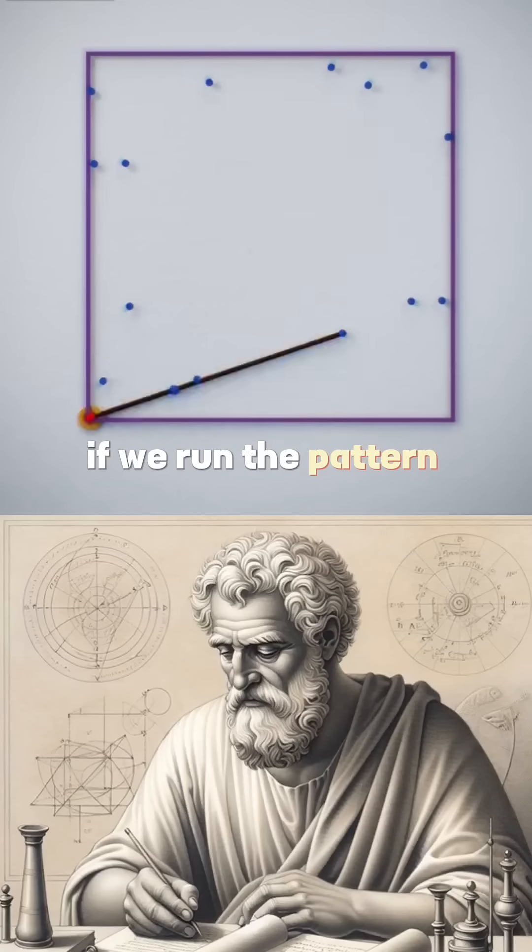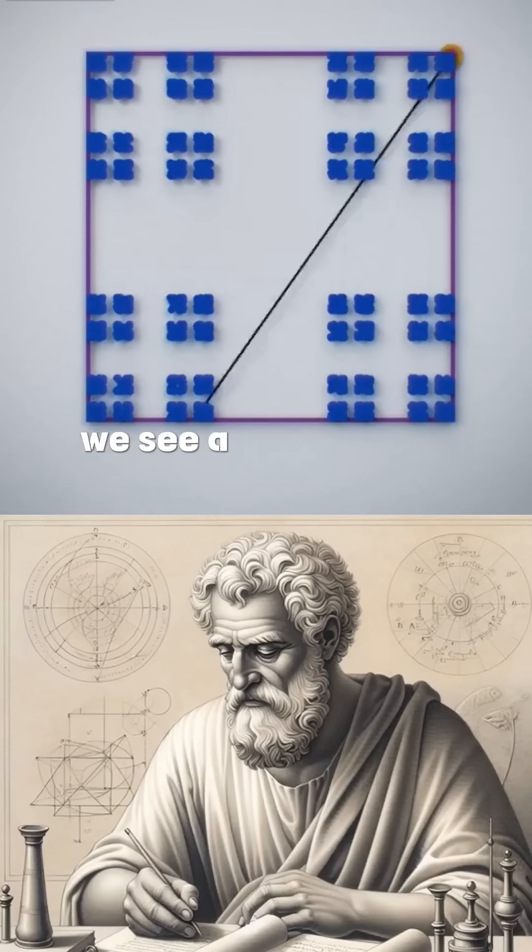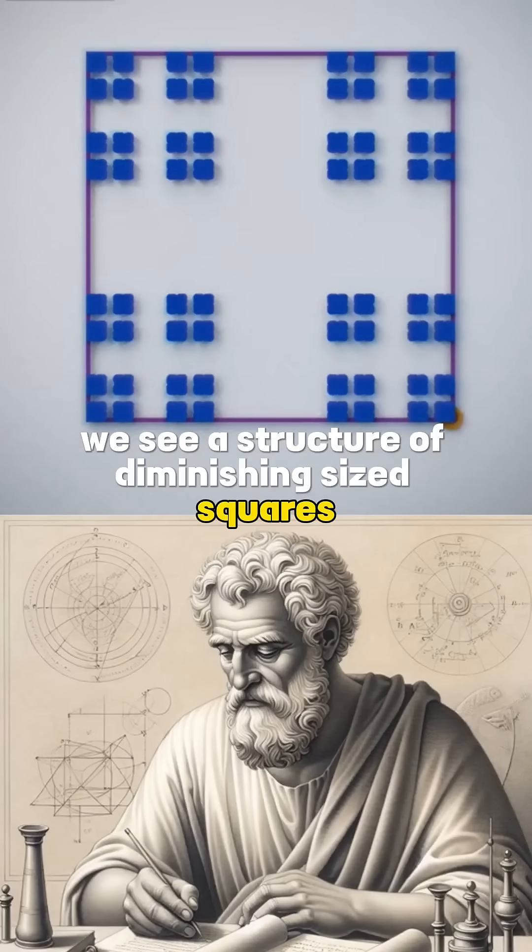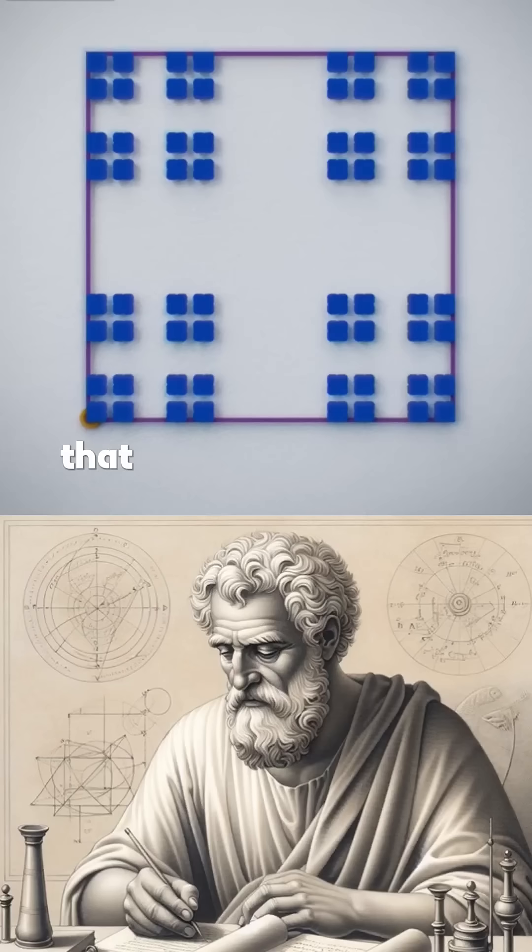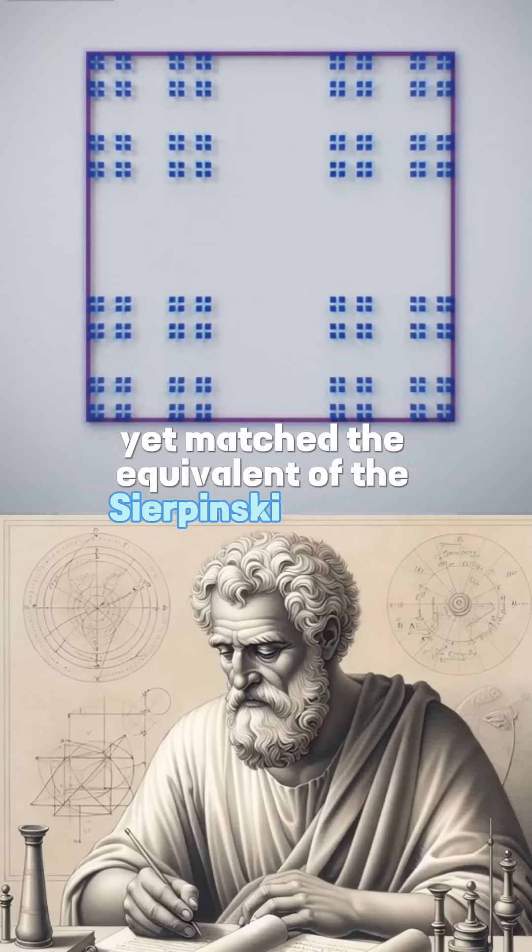If we run the pattern again, this time drawing points at the two-thirds mark on our lines, we see a structure of diminishing sized squares start to be defined. That is more interesting than we had before, but we haven't yet matched the equivalent of the Sierpinski triangle.